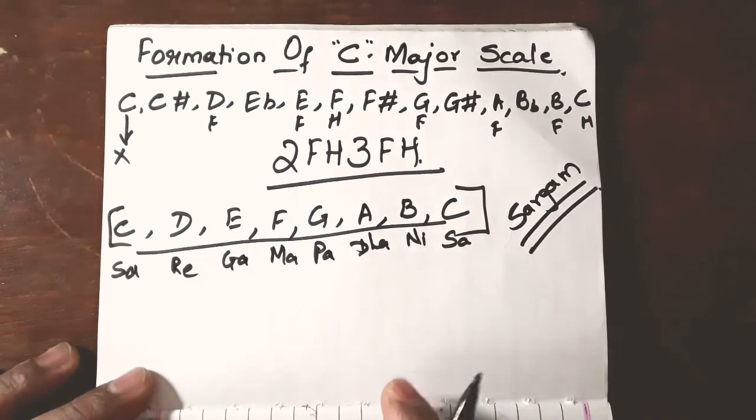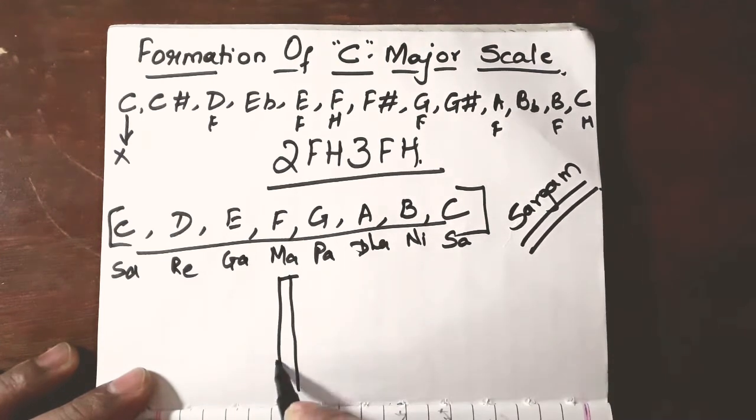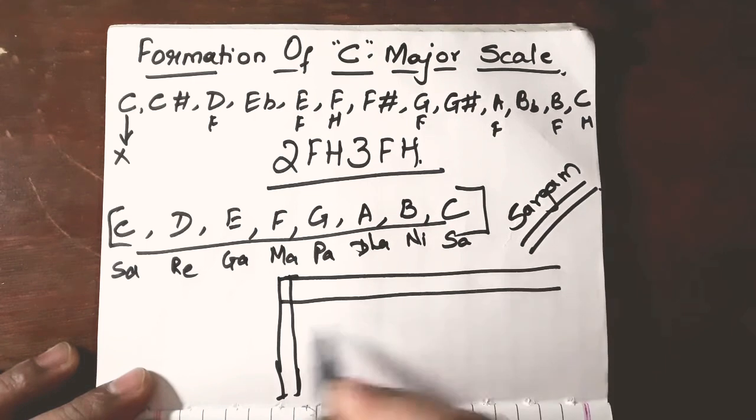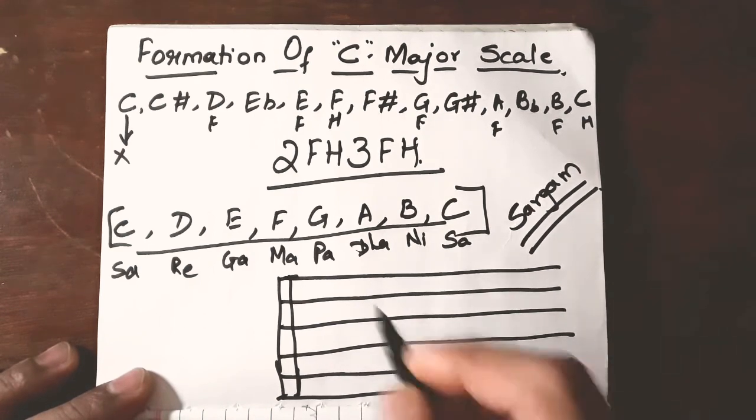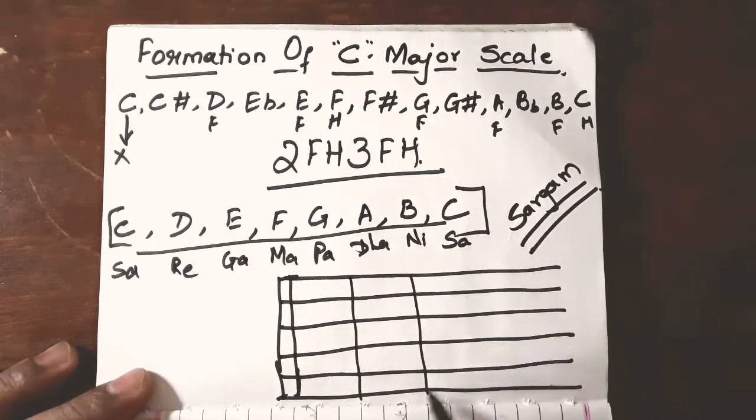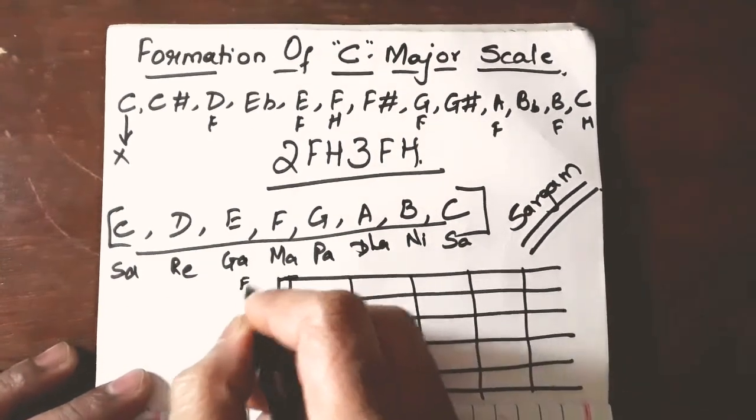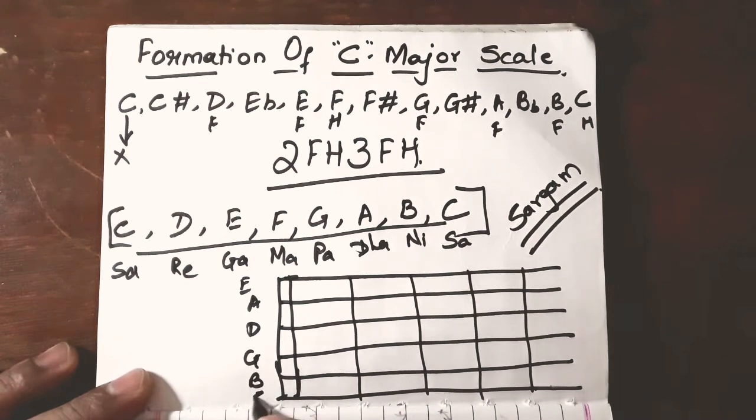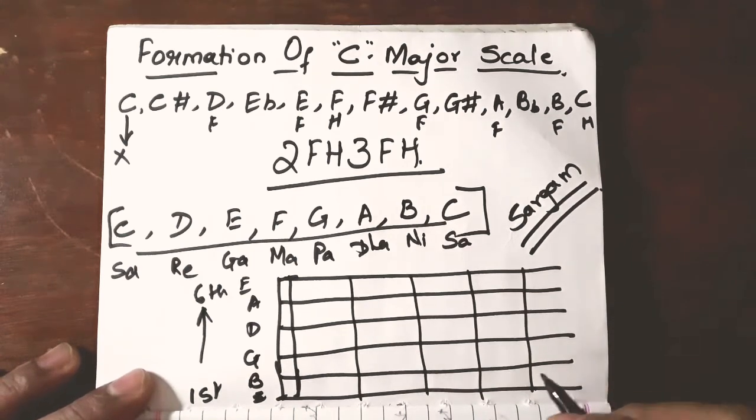Now, let us check these notes on the guitar. So, first I will draw the guitar. This is 6th string, 5th string, 4th, 3rd, 2nd and 1st. Let us draw first 4 frets. This is E, A, D, G, B and E this is first string all the way goes to 6th string right.